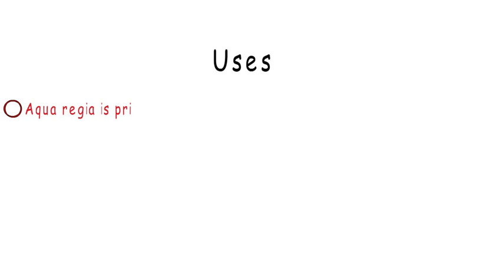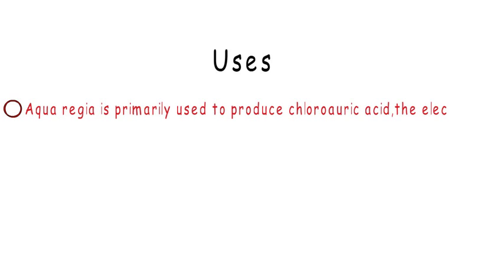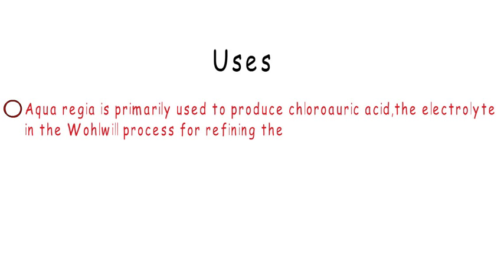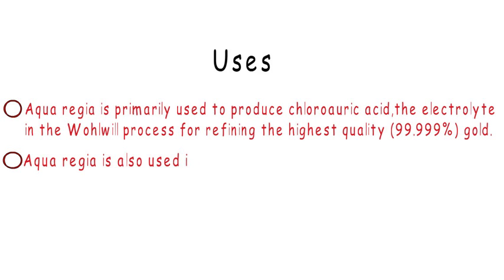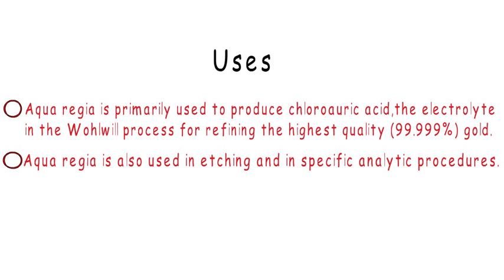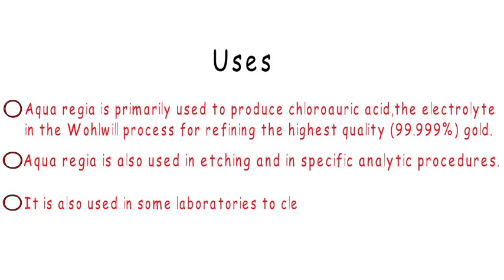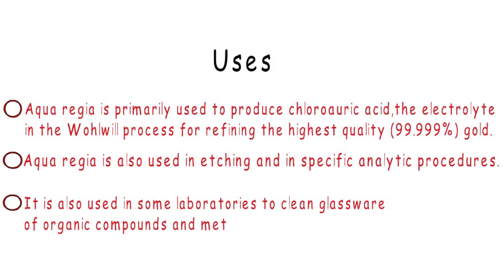Let's learn some uses of aqua regia. Aqua regia is primarily used to produce chloroauric acid, the electrolyte in the Wohlwill process for refining the highest quality of gold. It is also used in etching and in specific analytic procedures, and in some laboratories to clean glassware of organic compounds and metal particles.